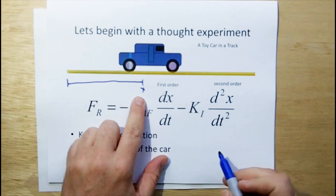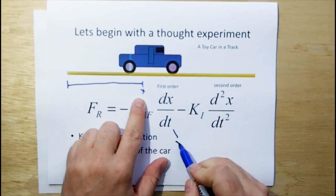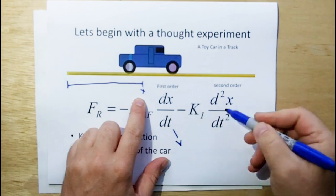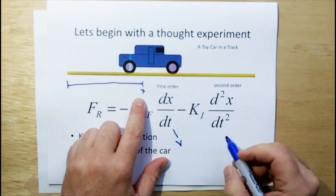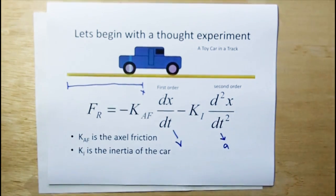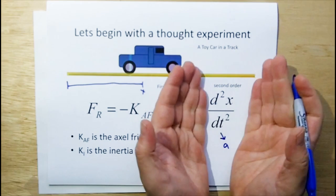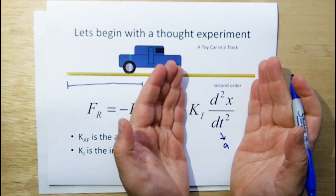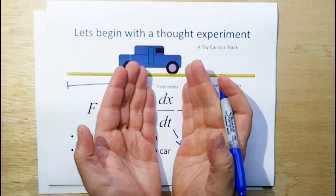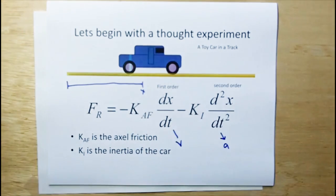The first derivative of x, dx/dt, is also known as velocity. The second derivative of dx/dt is known as acceleration. Because this is the second derivative, we call that the second order term, which includes a coefficient. This is the first order term. The x itself would be the zero order term.